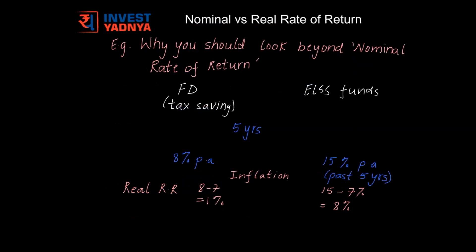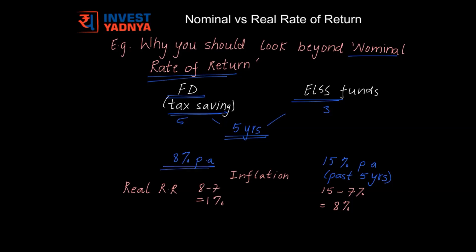Let us take an example to understand why it is important to look beyond the nominal rate of return. Let us compare a tax saving FD, which is a savings instrument, with an ELSS fund, which is an investment instrument. Tax saving FDs have a lock-in period of 5 years whereas ELSS funds have a lock-in period of 3 years. Assuming both investments have been held for 5 years, tax saving FDs have given returns of about 8% per annum, whereas ELSS funds have given returns of more than 15% per annum in the past 5 years.